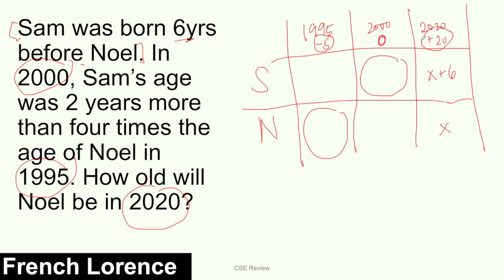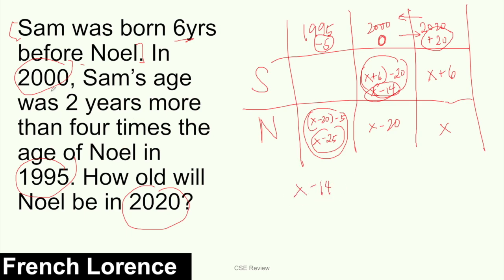Now paano makarating dito — again we're moving to the left. So yung dating plus 20 na, babawasan na ngayon natin ng 20. So this will be x plus 6 minus 20, or x minus 14. And then this x, gagawin natin yung x minus 20 para makarating dito sa 2000. And para makarating siya sa 1995, this will be x minus 20 minus another 5. Kasi pag umaatras ka ng edad, nagbabawas ka ng edad. So this will be x minus 25. And then the equation is, in 2000, Sam's age — which is x minus 14 — was 2 years more than 4 times the age of Noel in 1995, which is x minus 25.